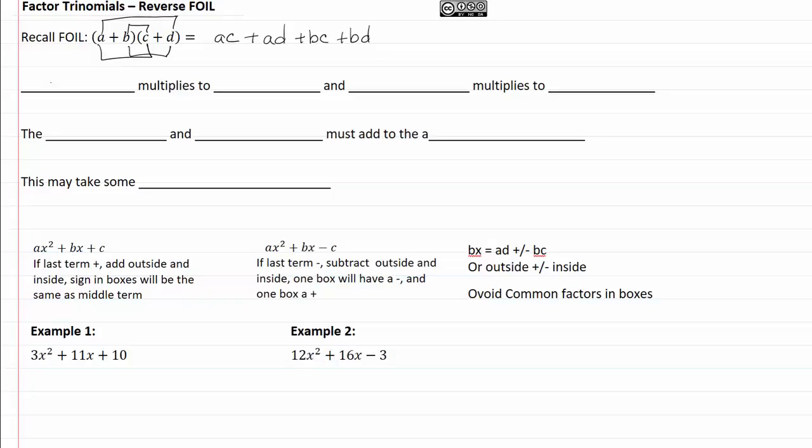So our first multiplies to the AC, and the last multiplies to the BD. Now, the outside and the inside add together to give us the middle term.